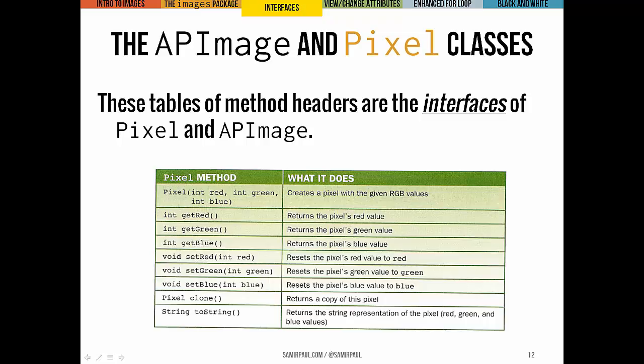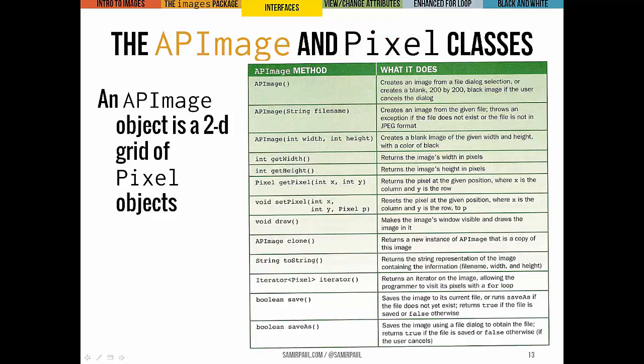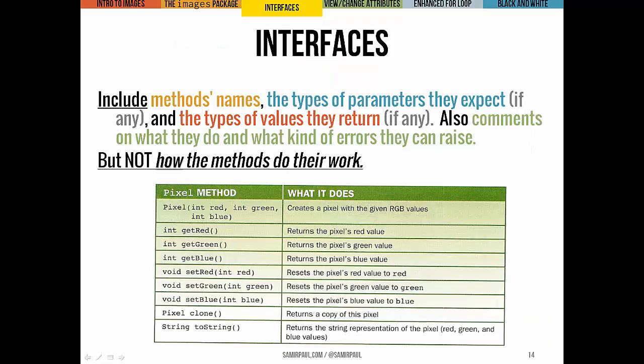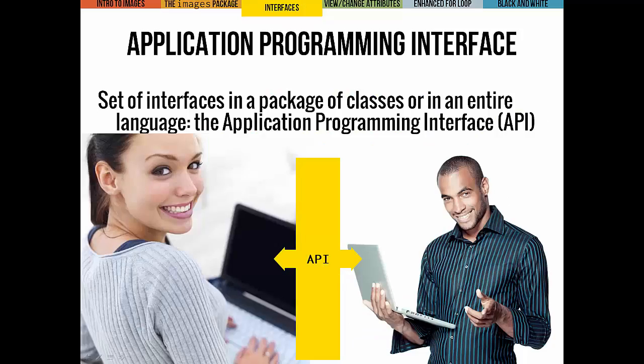We just saw the interfaces of the Pixel class and the APImage class — we saw the methods they can do, what the methods are called, what inputs and parameters they take, descriptions of what they do, and their return types. Here we have the interface for the APImage class. The main things in a class's interface are: what's the method called, what parameters does it take, what does it return, and a few comments on what it actually does. We don't care at the interface level about how a method does its job — just what's the input it expects and what output it gives.